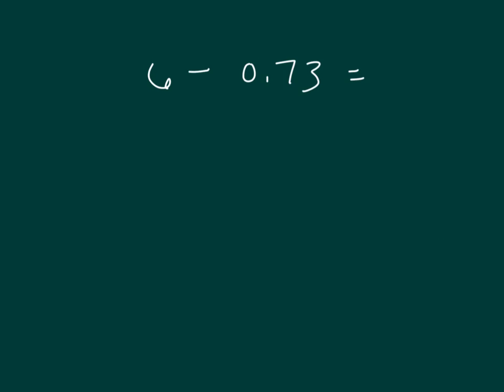Here we're asked to subtract 0.73 from 6. Numerically, it will look like this. We rewrite 6 as 6.00, and then we can go ahead and write out 0.73. And then there's going to be some regroups as we work through that problem.